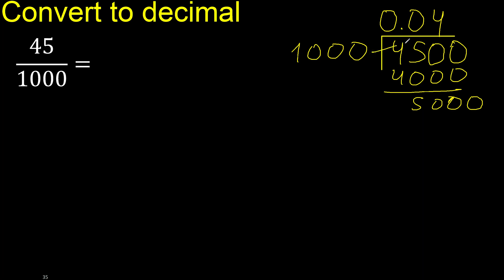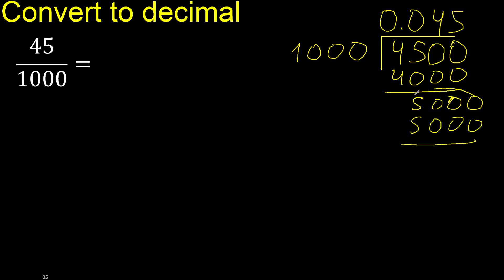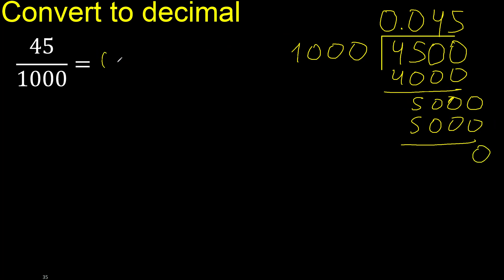1000 multiplied by which number? Multiply by 5 is 5000 — exact. Subtract: 0. Therefore finish.